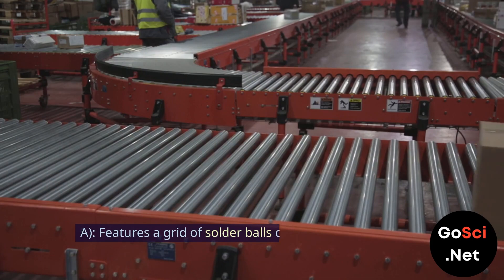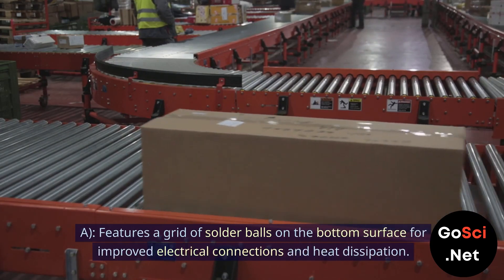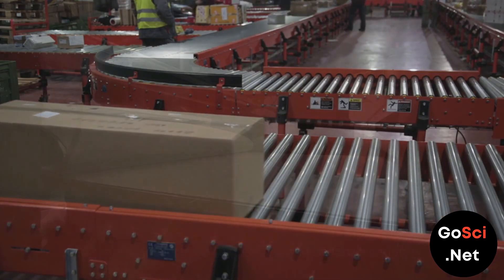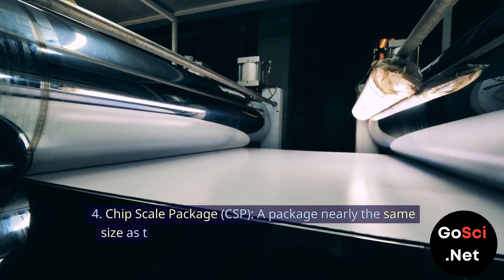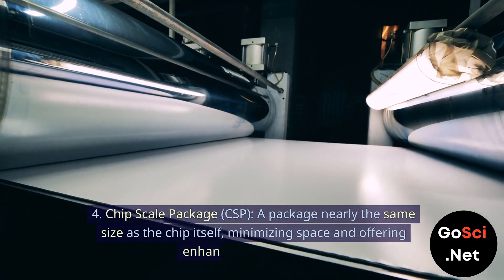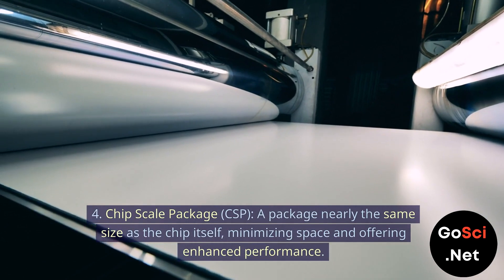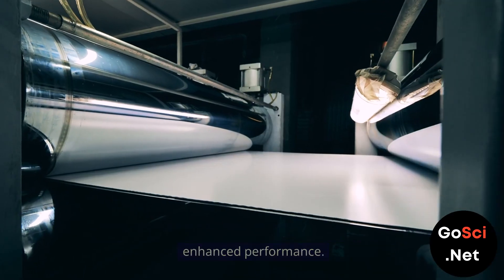3. Ball grid array (BGA), which features a grid of solder balls on the bottom surface for improved electrical connections and heat dissipation. 4. Chip-scale package (CSP), a package nearly the same size as the chip itself, minimizing space and offering enhanced performance.